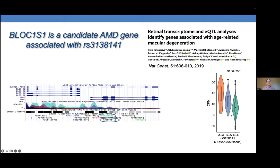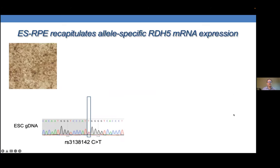A nice compromise is that we're both right: they wouldn't have seen RDH5 because it's not appreciably expressed in the neural retina, and our small sample size was probably underpowered to detect the more modest difference in BLOC1S1 expression. We're now going in and editing these sites to identify whether they're causal and what genes are affected by changing the allelic state at those variants.